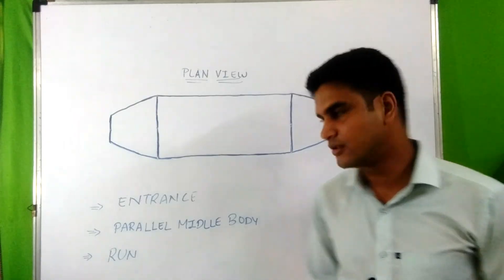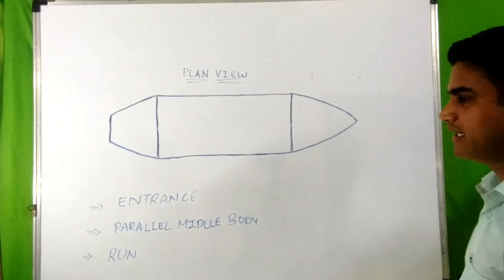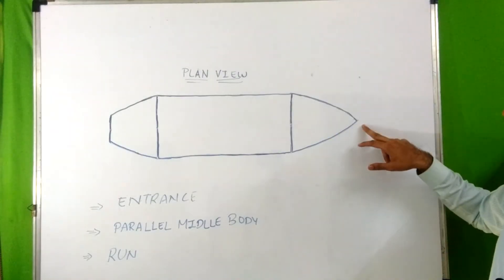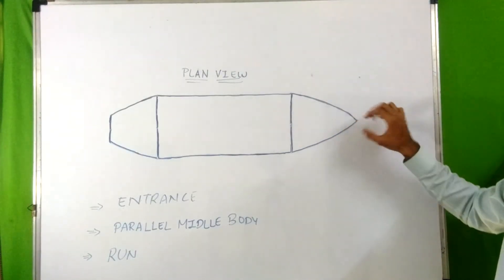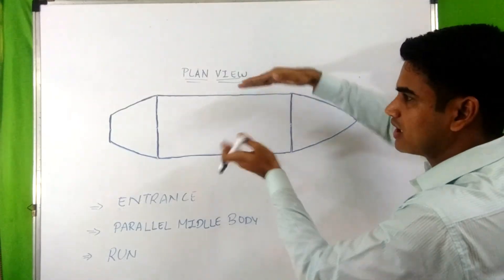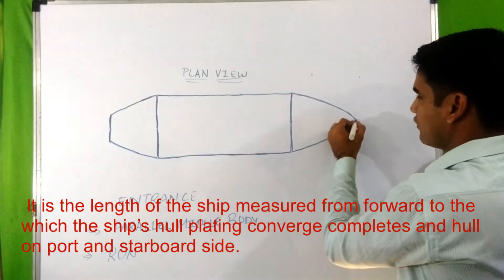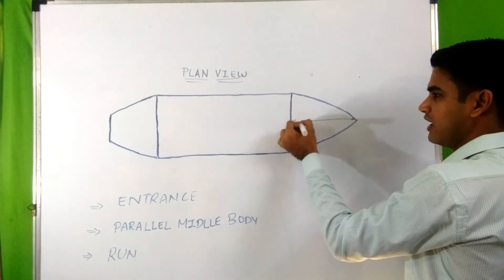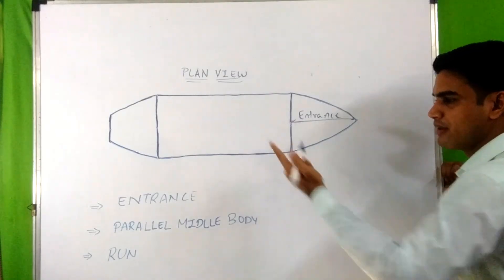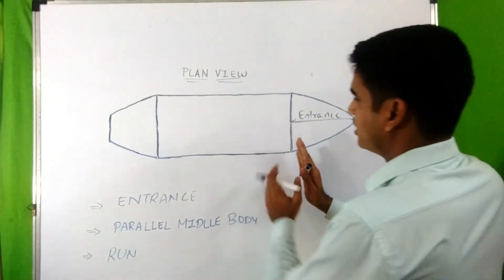Now we will discuss entrance, parallel middle body, and run. Entrance is the length measured at the forward end from the extreme forward end where the converging completes, to the part of the ship where the hull plating at the forward side starts going parallel. This length is known as entrance.